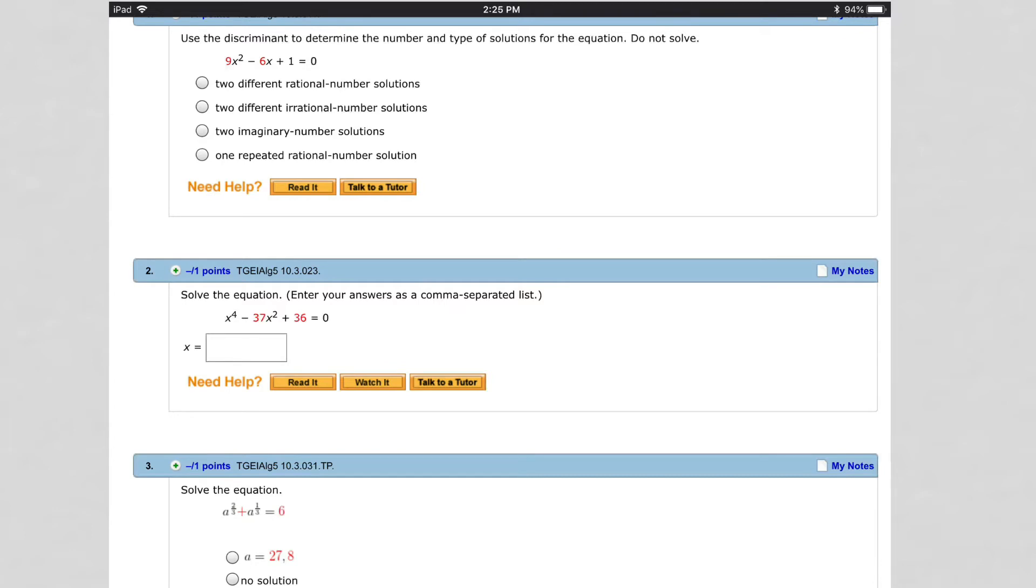Then you have equations that are quadratic in form. So there's a few examples of that in your review assignment. On these equations that are quadratic in form, a lot of times students find the substituted variable u, but they don't go back and find the original variable in the problem.